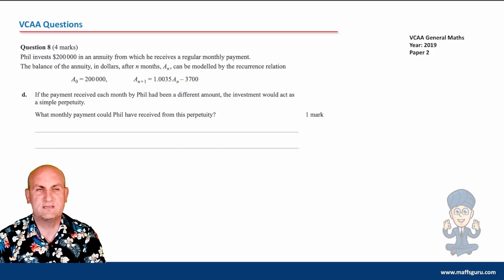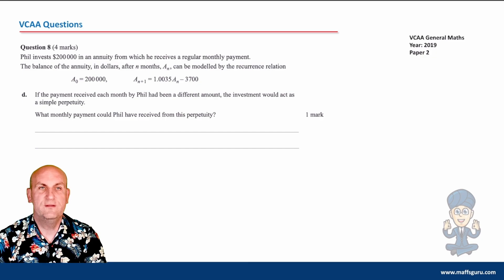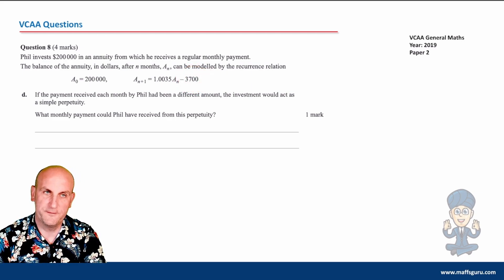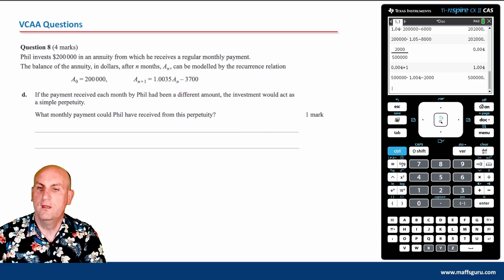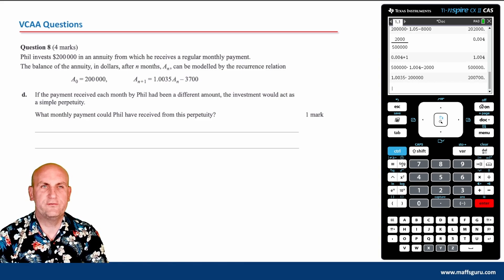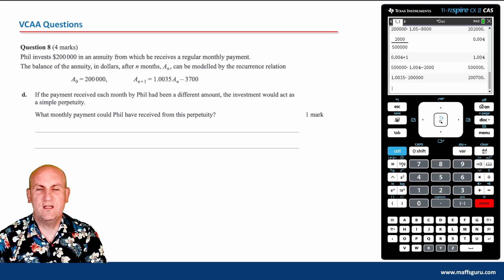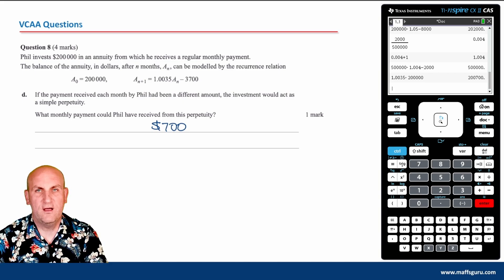From a 2019 question: Phil invests $200,000 in an annuity. The recurrence relation uses a multiplier of 1.0035. If his payment had been a different amount, the investment would act as a simple perpetuity. What monthly payment could he receive? Compute 1.0035 × 200,000 = 200,700. The excess above 200,000 is $700, so his monthly payment for a perpetuity would be $700.